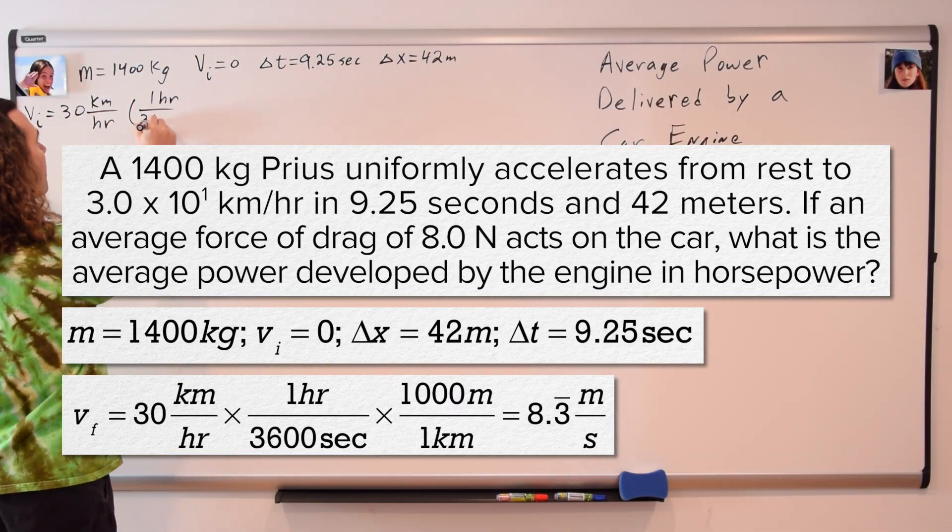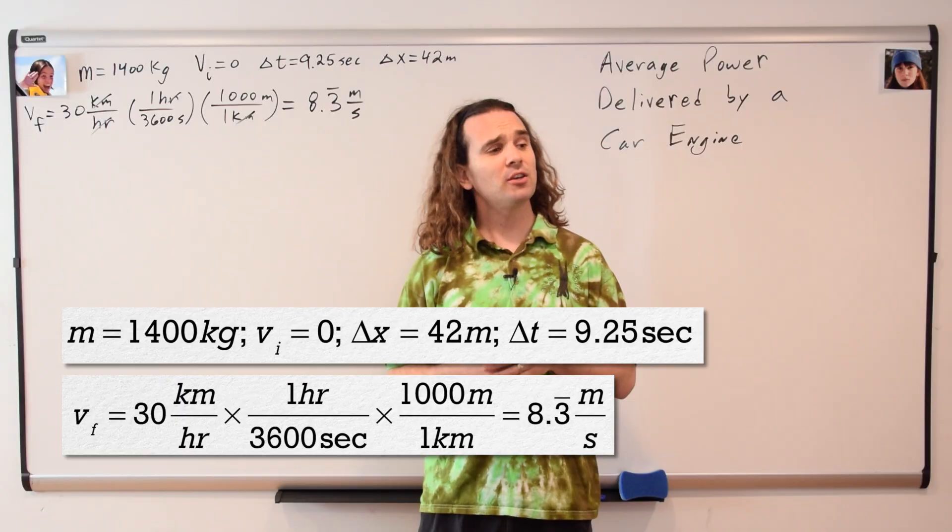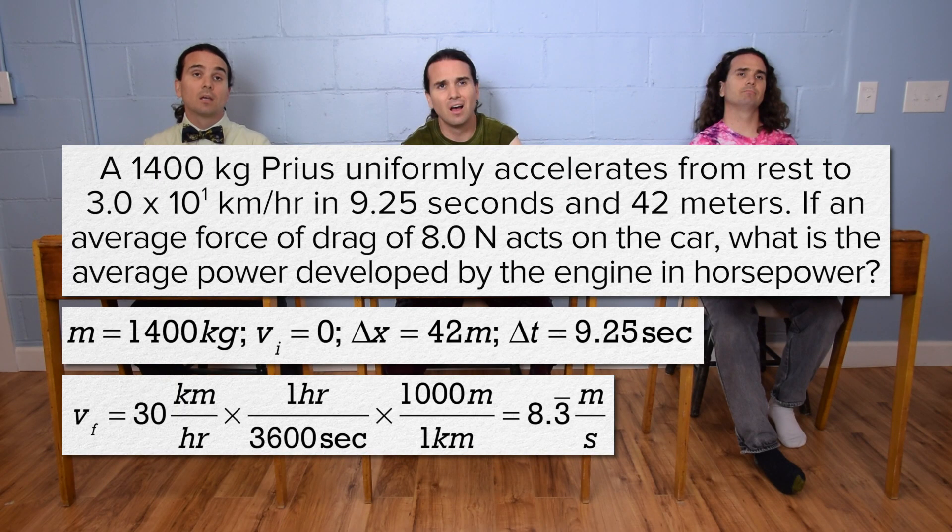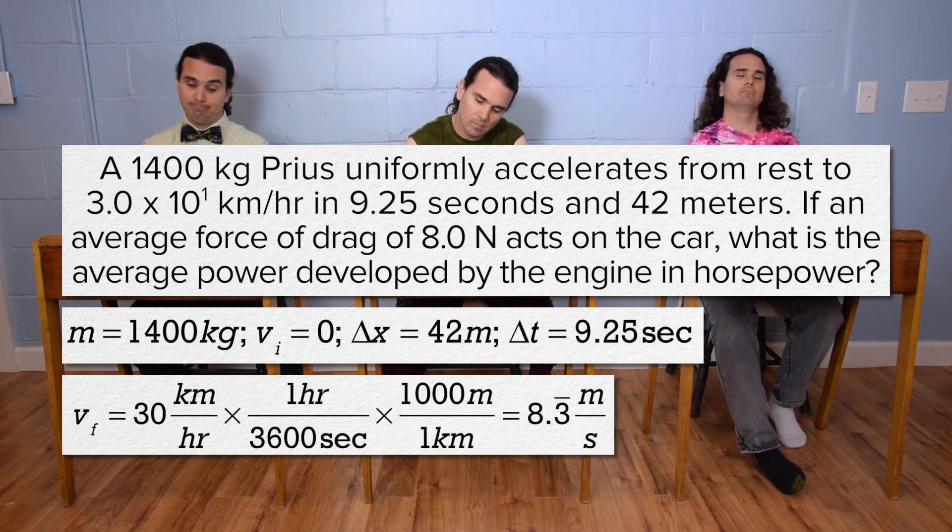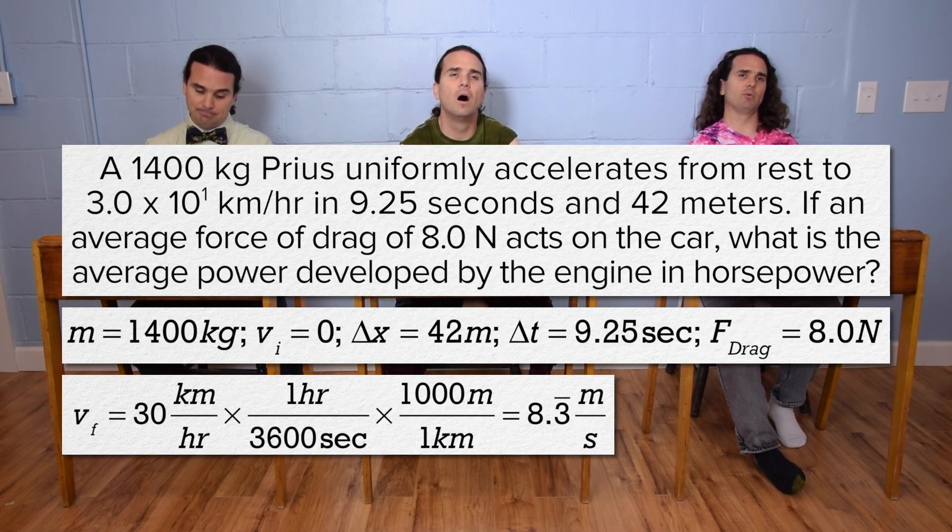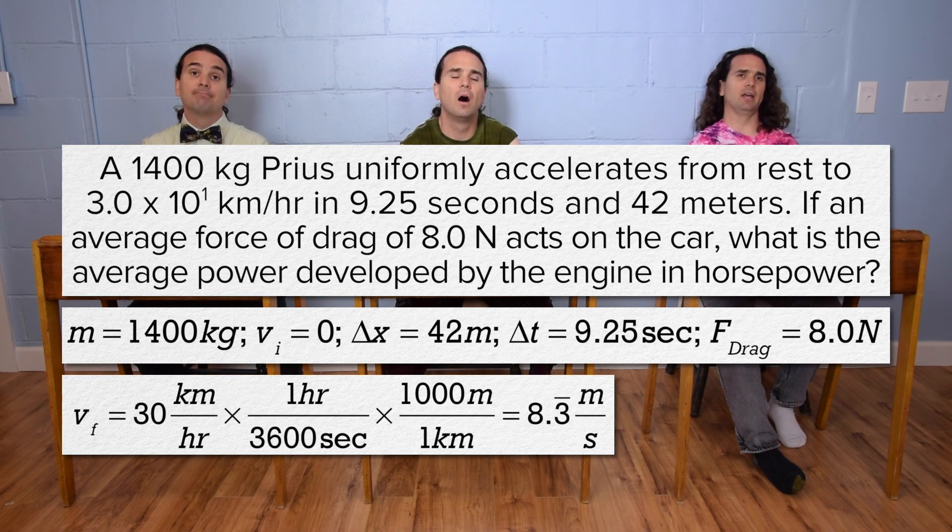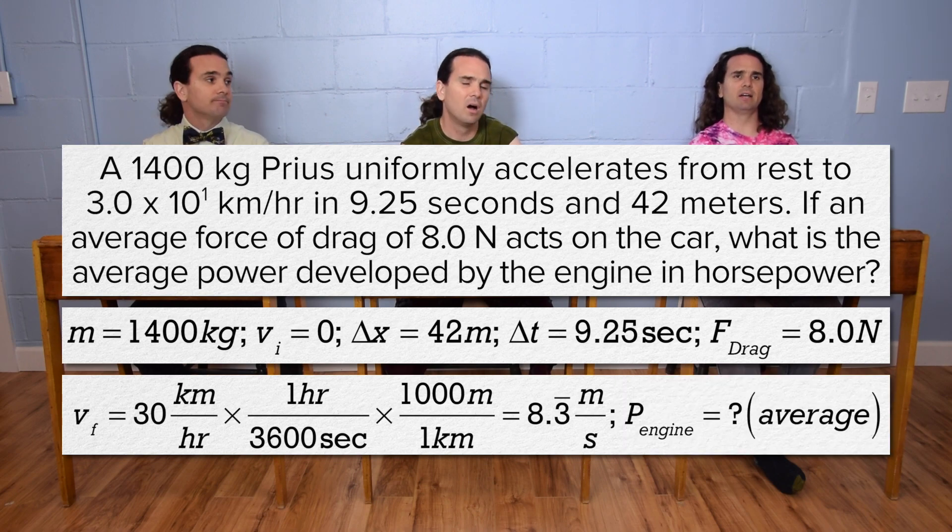Thank you Billy, could you please read the rest of the problem? If an average force of drag of 8.0 Newtons acts on the car, what is the average power developed by the engine in horsepower? Drag force is 8.0 Newtons and the average power delivered by the engine equals question mark.